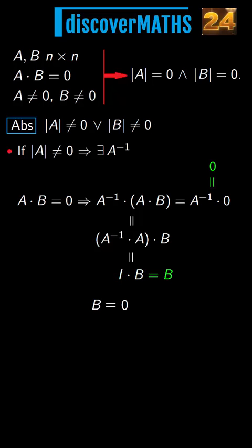So we've arrived at B is zero, which is false, since by our starting hypothesis B is different from zero.